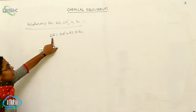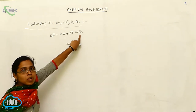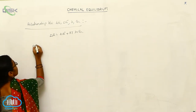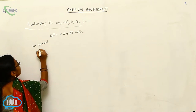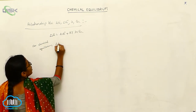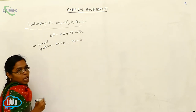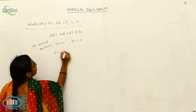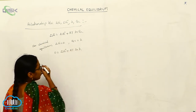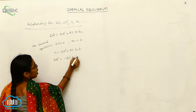Delta G is the Gibbs energy, delta G naught is the standard Gibbs energy, R is the gas constant, T is temperature, and Qc is the reaction quotient. For chemical equilibrium, whenever delta G is equal to 0, the reaction quotient Qc equals K. So: 0 = delta G naught + RT·log Qc, giving delta G naught = minus RT·log Qc.